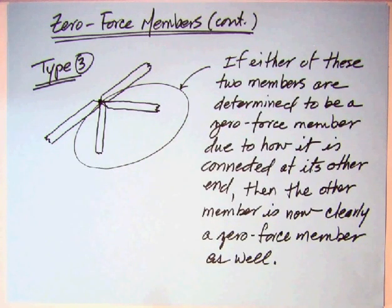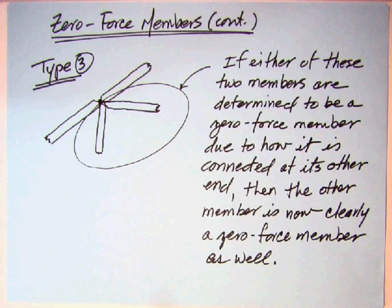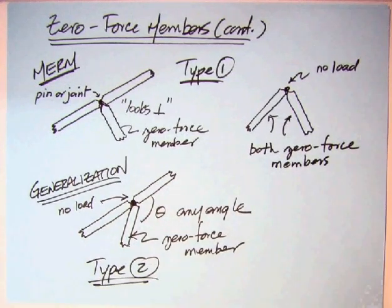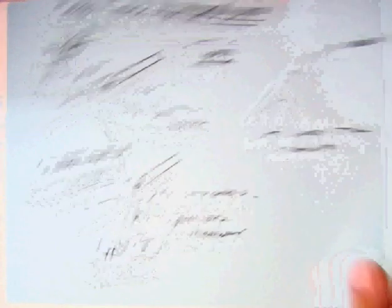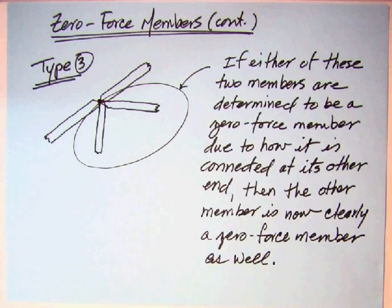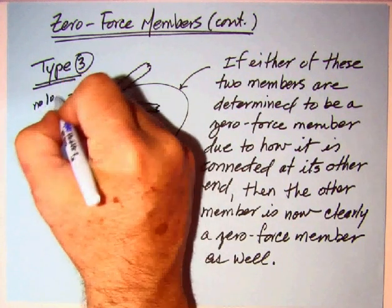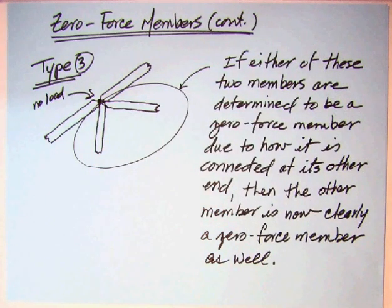In the PE exam — and this would be a great problem for the FE as well — identifying zero force members in a truss is a key task. It's not critical to memorize the three type labels, but you should know that you can have either a perpendicular (Type 1), any angle (Type 2), or a four-member case where one is determined zero (Type 3). You can't take them out — they're there for stability and other loadings. Most importantly, we're making the assumption that there is no load at the pin. If there's any load at the pin we're looking at, all bets are off — no zero force members.